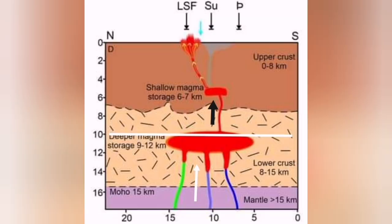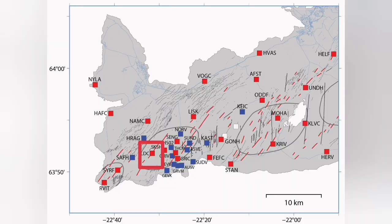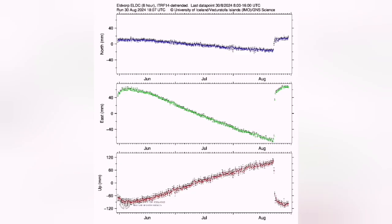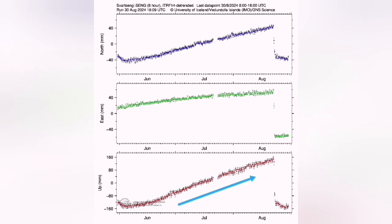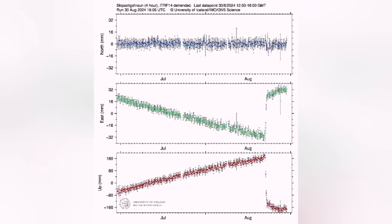We are seeing in three stations, Eldvorp, Svartsengi, and Skipatsik Heron, evidence from the GPS data showing that the land rise due to the magma arriving and accumulating in the Svartsengi medium depth reservoir is increasing. We are seeing evidence that the land uplift has started again.